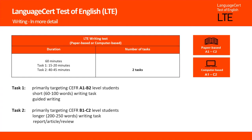The first task is a guided writing task, primarily targeting A1 to B2 level candidates. It asks them to produce a short piece of writing which will successfully communicate the required information. Candidates will need to write between 60 and 100 words.